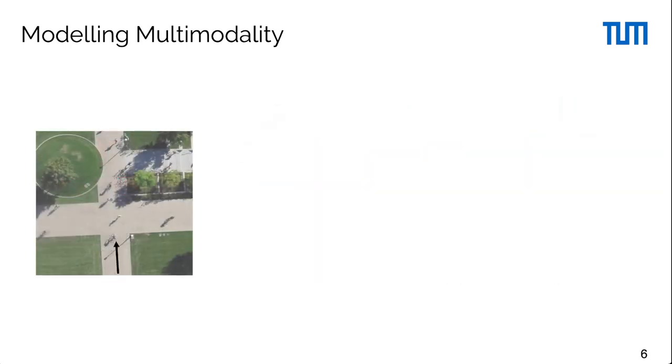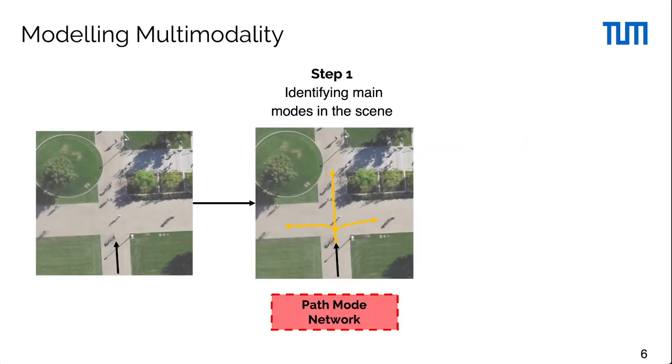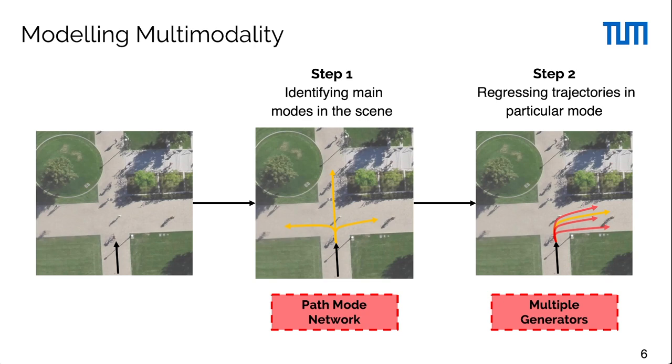We propose to decompose the problem into two steps. For the first step, we introduce the path mode network that identifies the main modes in the scene. Second, the path mode network selects the appropriate generator to predict trajectories for the specific mode.